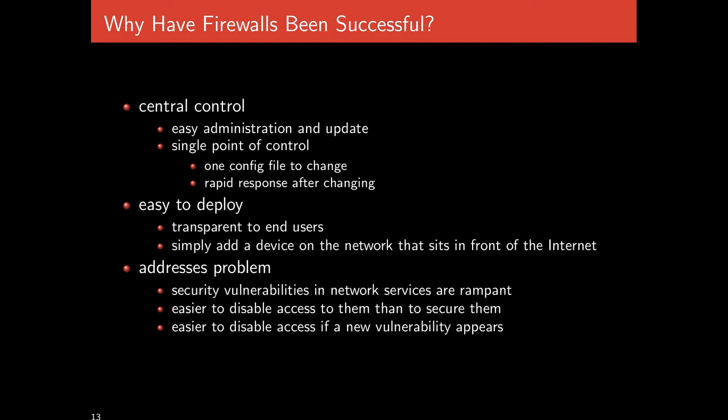Firewalls are also very easy to deploy — you're not interacting with everyone's computer turning off services. This one machine is transparent to end users, sitting between users and the internet, processing the metadata of all their traffic. Firewalls are successful because they address an actual problem: security vulnerabilities in network services are rampant, and it's easier to disallow access than to secure them. New vulnerabilities will always exist, and it's easier to control access via a firewall than to ensure every machine runs secure, up-to-date software.